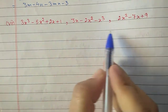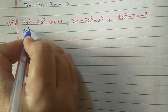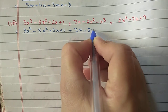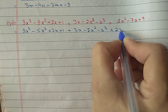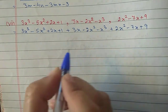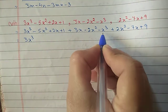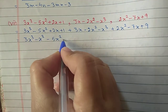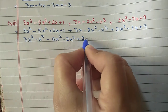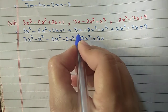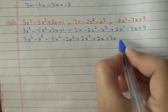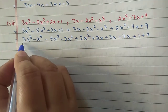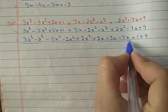Seventh part: three expressions to add: 3x cube minus 5x square plus 2x plus 1, then plus 3x minus 2x square minus x cube, and plus 2x square minus 7x plus 9. Taking like terms together: 3x cube and minus x cube; minus 5x square, minus 2x square, and plus 2x square; 2x plus 3x and minus 7x; constant plus 1 and plus 9.